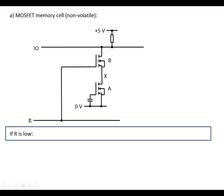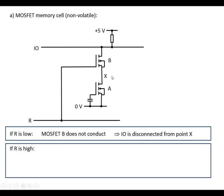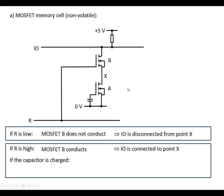If we've got the read line R, and if that is low, it means that MOSFET B is not going to conduct, which separates the input-output line or the data line from point X. If R is high, then MOSFET B is going to be conducting, which means that the data line is going to be connected to point X. And the state of point X depends on whether the capacitor is charged or not. If the capacitor is charged, then MOSFET A is going to be conducting, which means that point X is going to be connected to 0 volts.